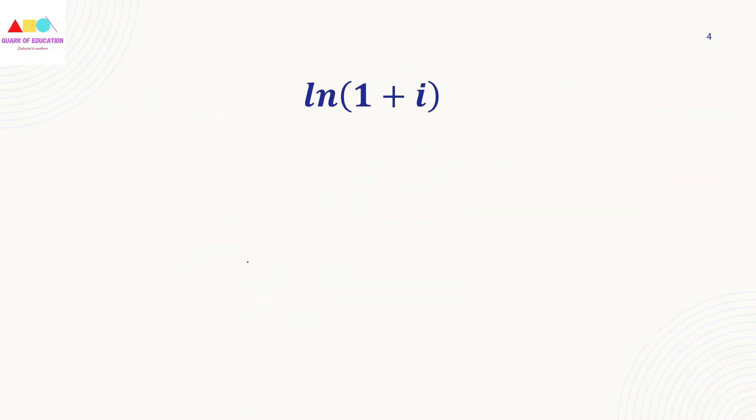We have ln(1 plus i). So what do we need to solve? We have z equal to 1 plus i. We have to write the modulus - that is root over 1 square plus 1 square, that is root 2. We have to write the argument - tan inverse y by x plus 2n pi.